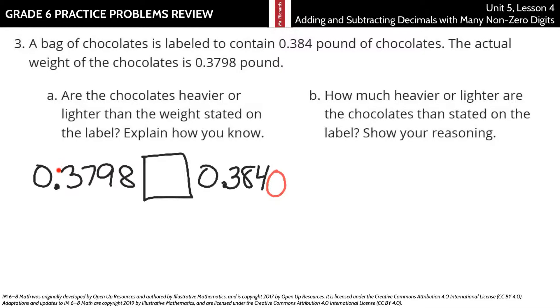Now, if we just kind of visually compare 3,798 ten-thousandths with 3,840 ten-thousandths, you find that the 3,840 is the bigger number. So, to answer the question, are the chocolates heavier or lighter than the weight stated on the label?